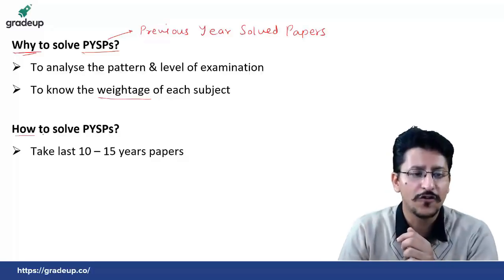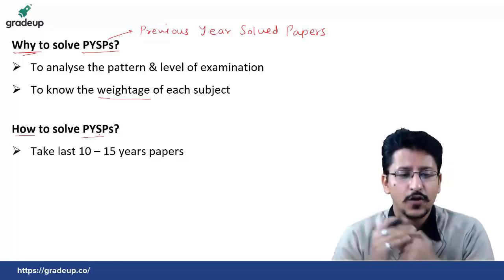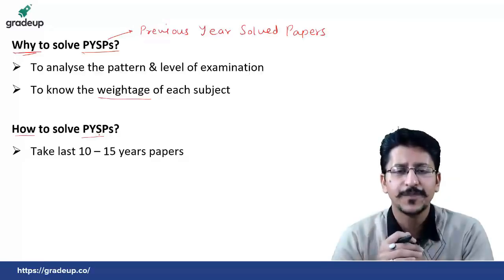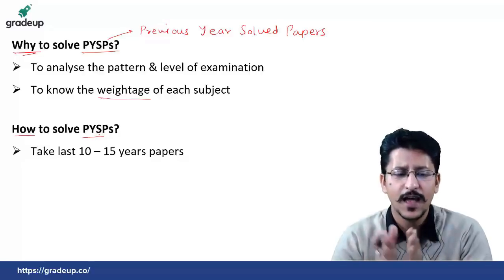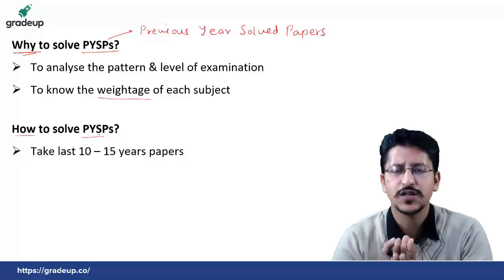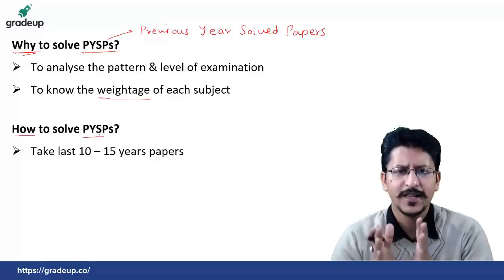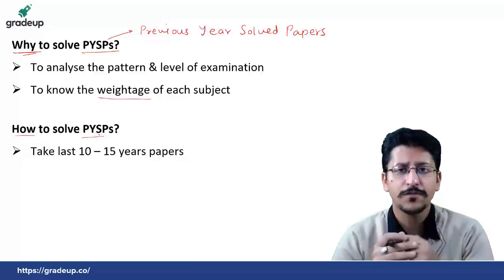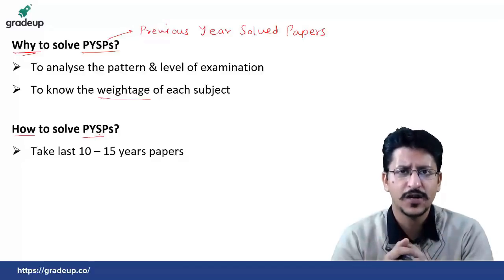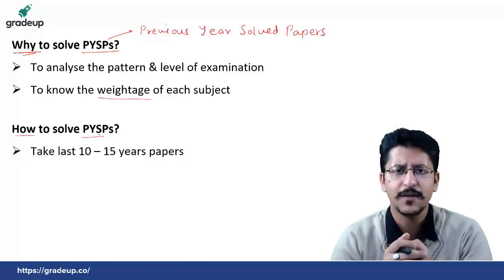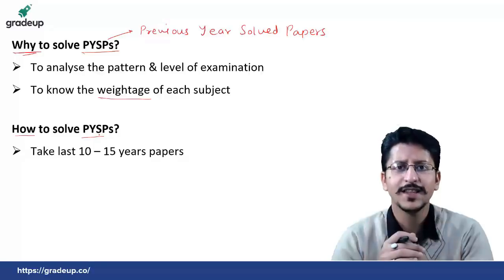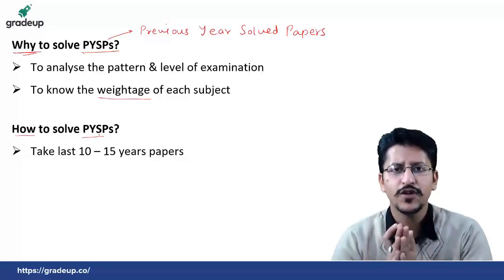Ab baat karte hain how to solve PYSPs. Uske liye aap kya kar sakte hain: you can take last 10 to 15 years' papers. Jo purane papers aapke hue hain, aap chahe kisi bhi branch se belong karte hain, apni branch ke 10 to 15 years ke papers le sakte hain from the internet. There is no need to buy any book of that sort. Aapko wo internet par mil jayenge; aap GATE ke official website se utha sakte hain, last 5-6 years ke papers aapko wahan bhi mil jayenge. Ya fir we at GradeUp had also given you all these papers.